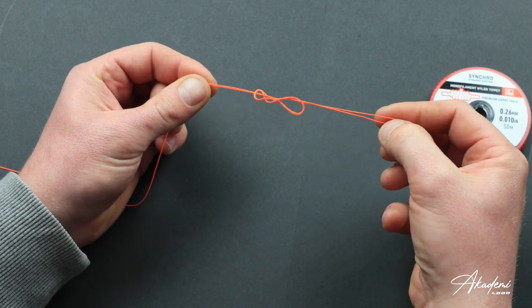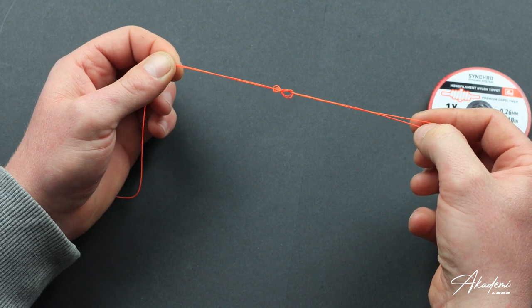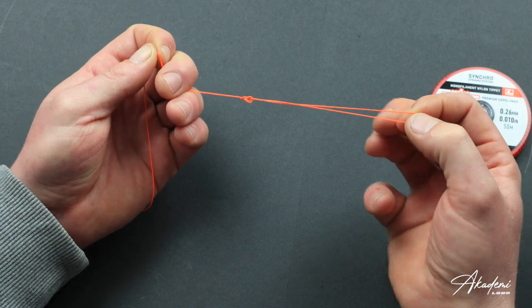You'll know you've got it correct because it'll start making the shape of a number eight as we start to pull. Normally we'd wet the knot here and pull tight.